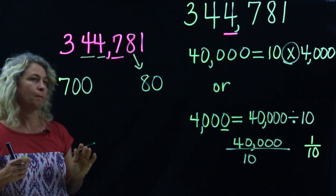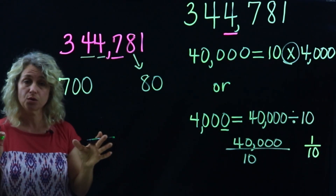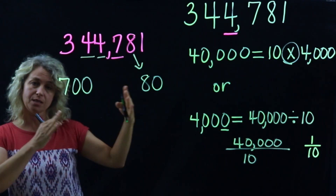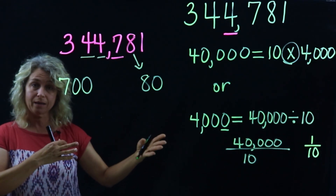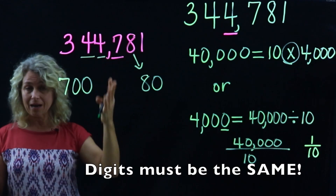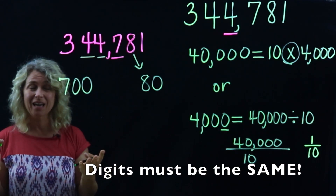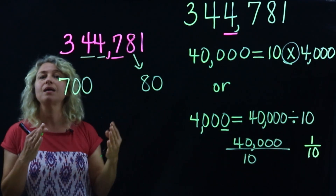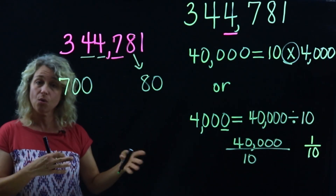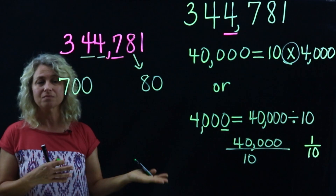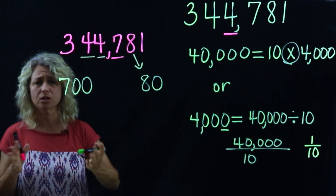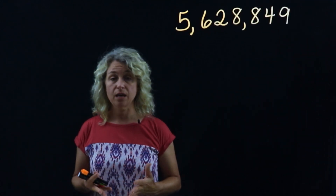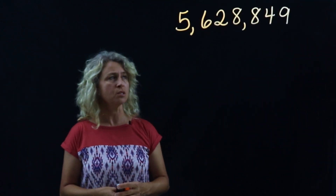This is really important for place value understanding: knowing that one digit is ten times the digit to its right means they have to be the same digit. Unless they're the same digit, one can't be one tenth of the other, or ten times the other. So that's a good thing to keep in mind.